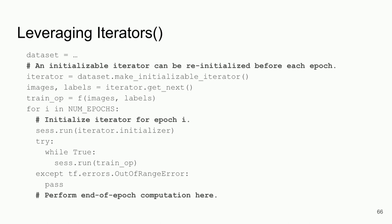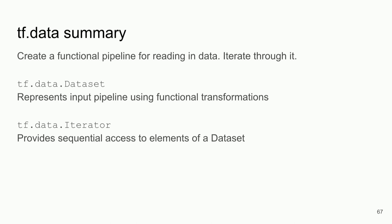You could also get even fancier: initialize for each training pass, yield something or get a status check. A nice thing is that once you get to the end of all the data — you've tapped through the city's water supply — you'll get an out-of-range error, which just means you've finished training. Summary of tf.data: creating a functional pipeline and iterating through it requires a dataset representing the input pipeline using functional transformations, and an iterator providing sequential access to the elements.